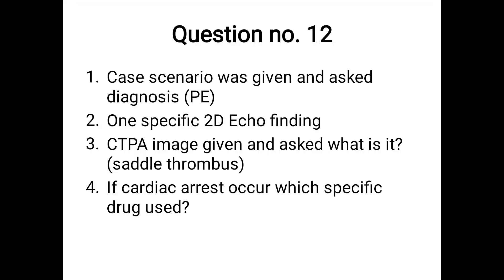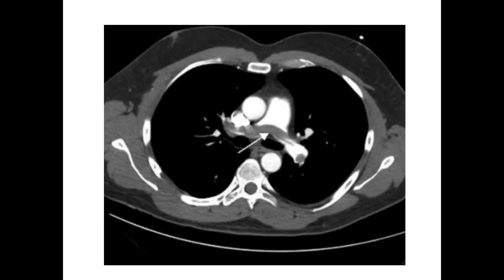Question 12: a case scenario suggestive of pulmonary embolism. One specific 2D echo finding to remember: McConnell sign — global RV dysfunction with apical sparing — or the 60-60 sign (TR pressure gradient ≤60 mmHg and pulmonary acceleration time ≤60 ms). There are eight to ten findings to remember, including D-shaped left ventricle in short axis and RV dilatation. CT pulmonary angiography images were given showing a dark-colored thrombus in the main pulmonary trunk — called a saddle thrombus.